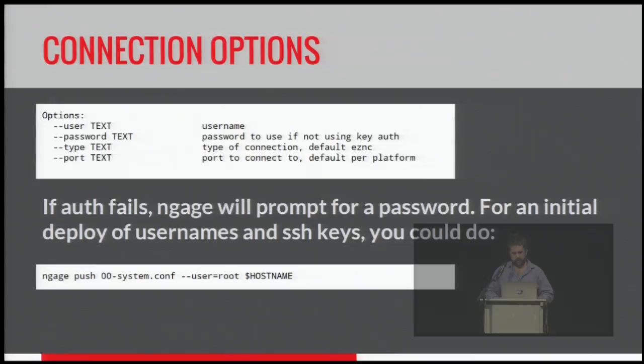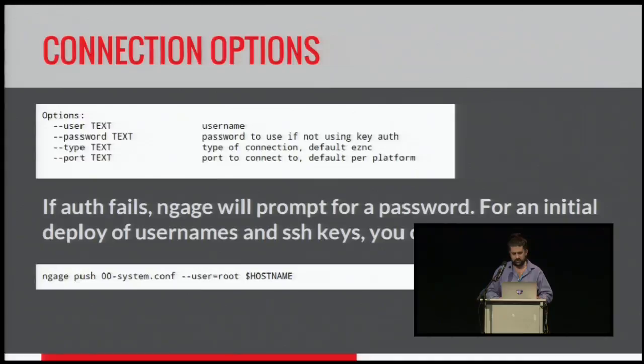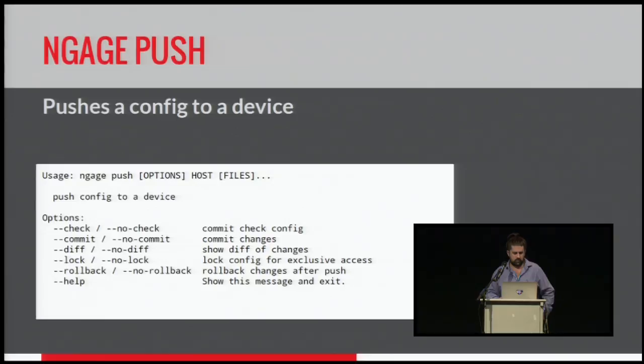Connection options — same thing. If auth fails, it prompts for a password, so the first time you get a machine, as I have an example here, you push the config, it uploads all the SSH keys, and you never have to deal with the password again. Push is much like Junos — check, commit, diff, lock. So you can obviously download this and look later, plus I assume most of you are familiar with how that works. Same with pull. There are single utility functions for doing commits and rollbacks on the command line.